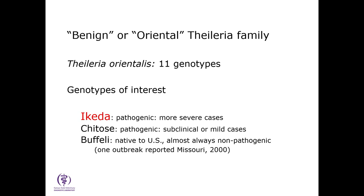When we talk about Theileria orientalis, you also hear it called the benign or oriental Theileria family. Within that family there are 11 different genotypes. Of those 11, there are really three of particular interest. Number one, Ikeda — shown in red — is considered the most pathogenic and is associated with the most severe clinical cases. Then we have Chitose, which is also pathogenic, though its pathogenesis is a bit controversial; it's probably associated more with subclinical or mild cases. And there's Buffeli, which has been around in the United States for a very long time and has generally been considered benign, though one paper from 2000 described clinical signs in a Missouri beef herd associated with Buffeli.